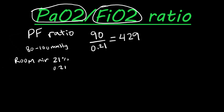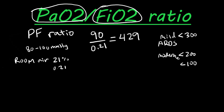The lower the number, the more severe the respiratory status. If they're going into ARDS — Acute Respiratory Distress Syndrome — a PF ratio of less than 300 is mild ARDS, less than 200 is moderate, and anything below 100 is severe ARDS, which is the most severe respiratory status.